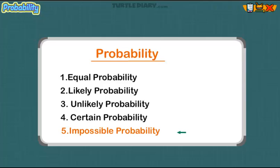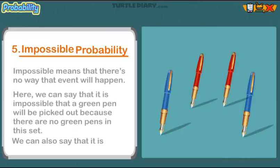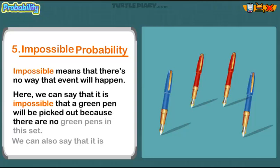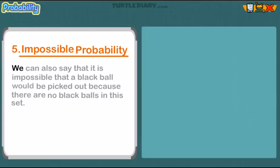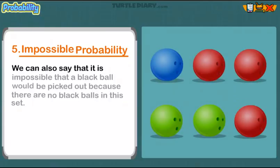Impossible probability. Here we can say that it is IMPOSSIBLE that a green pen will be picked out, because there are no green pens in this set. We can also say that it is IMPOSSIBLE that a black ball would be picked out, because there are no black balls in this set.